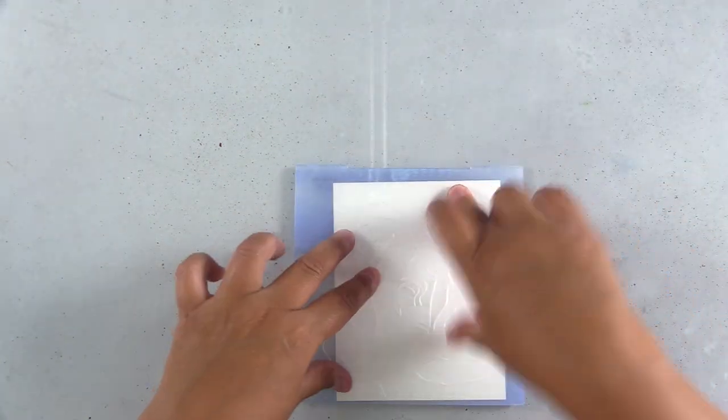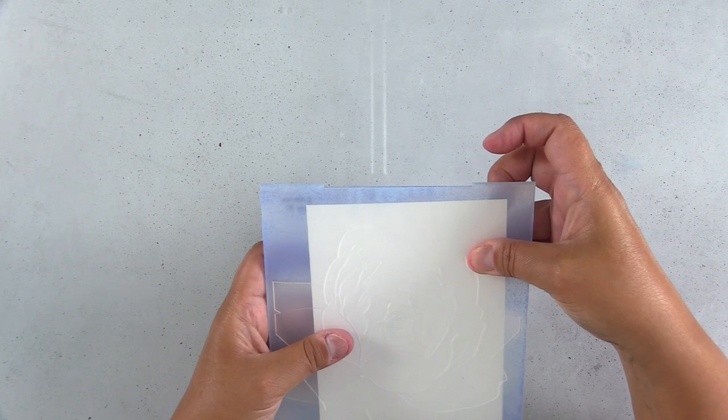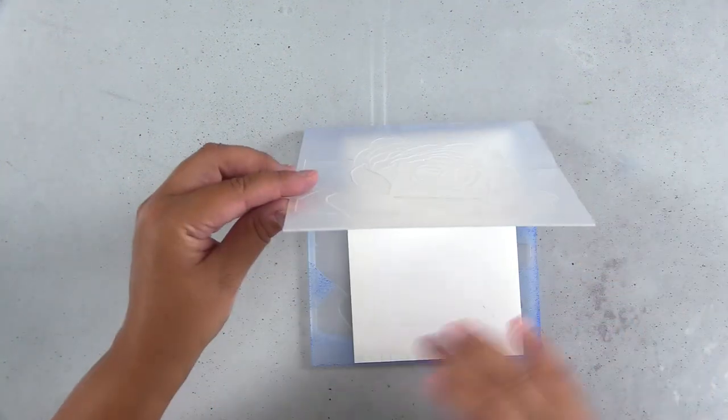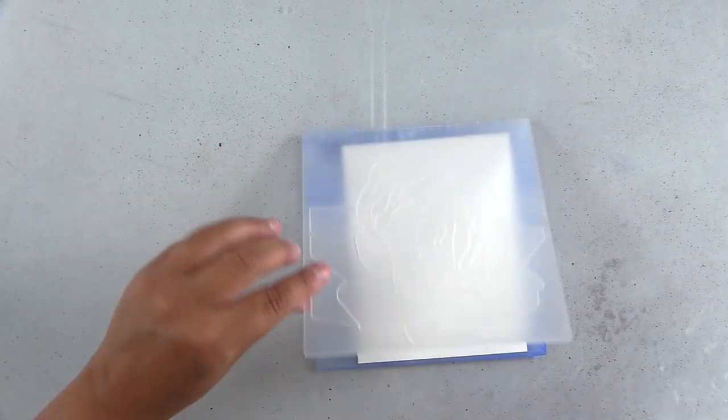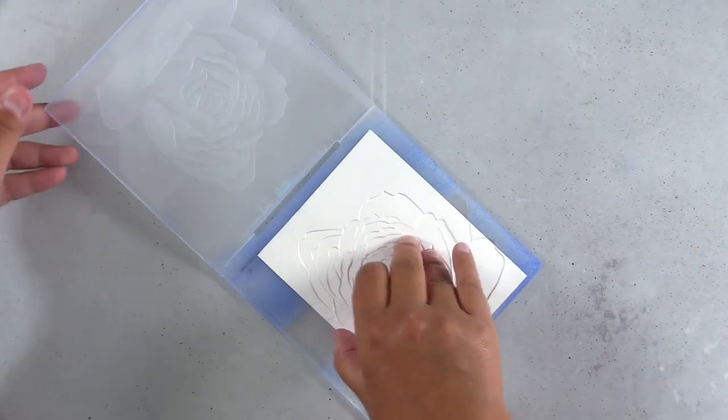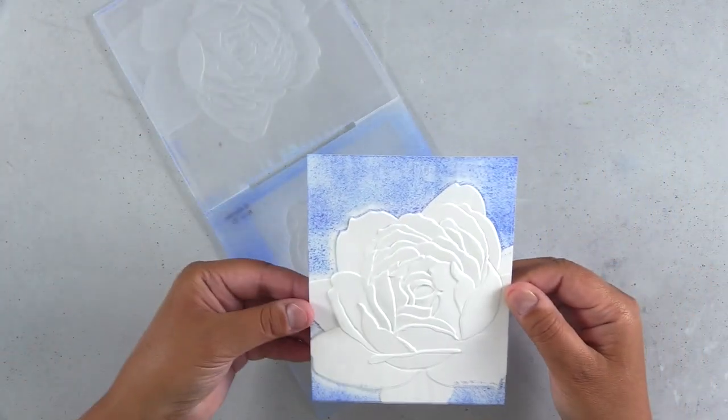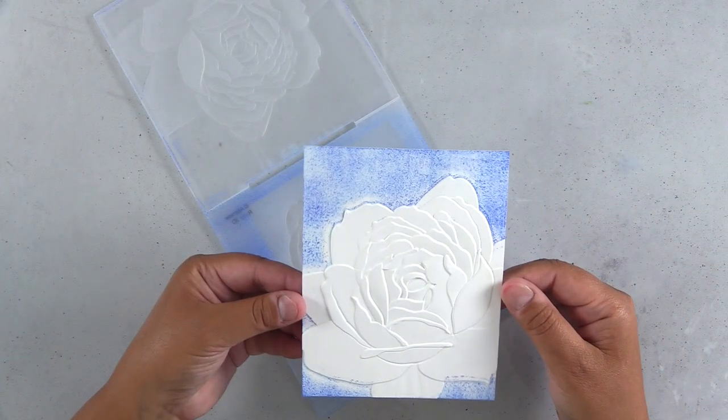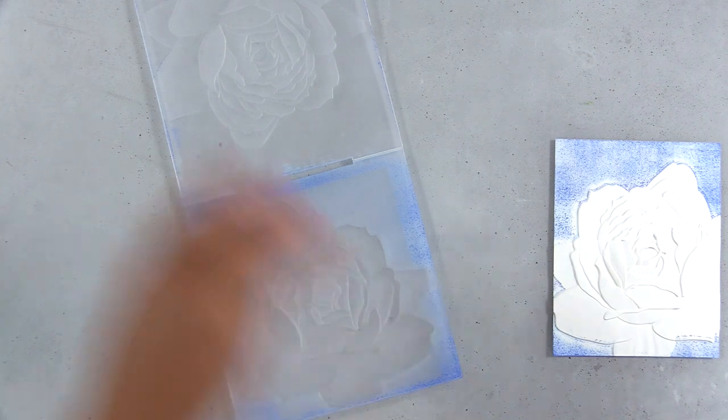I'm going to close up the embossing folder. Ideally you want to put your card down and leave it alone. I adjusted mine a little bit and you'll see I'll get just a little stray ink on the card, but it doesn't end up being a problem at all. I went ahead and ran that through my die cutting machine and you can see that it's embossed this beautiful rose.